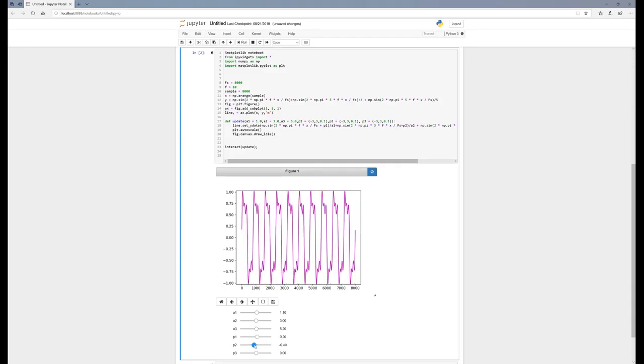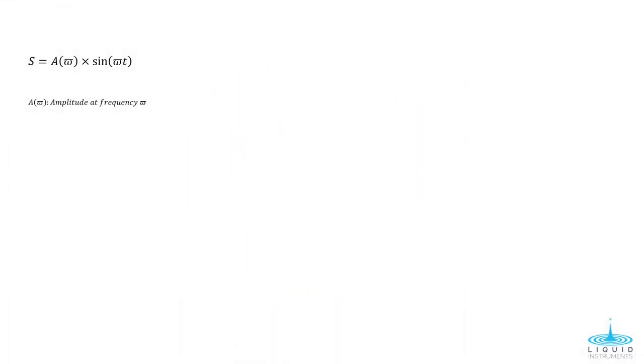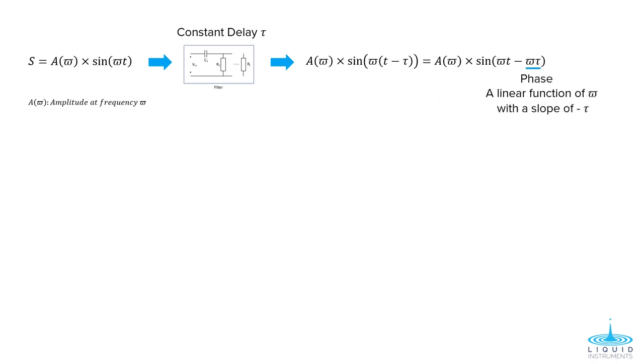So what defines a filter that produces the same amount of delay across frequency? Let's imagine that we have a signal s described as a function of frequency omega. After a theoretical filter of unity gain but constant delay tau, the filtered signal can be rearranged as this equation. We can see the phase of the signal is a linear function of the frequency with a slope equal to negative tau.